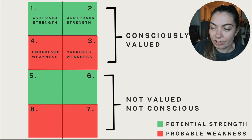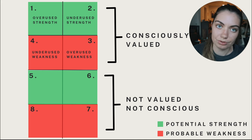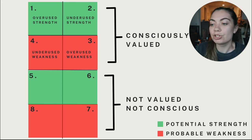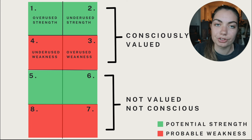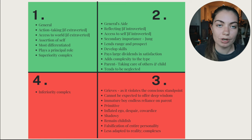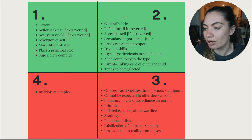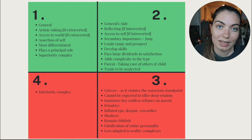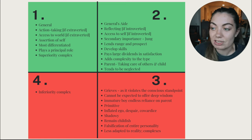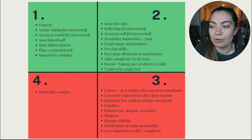Your first function is the correct tool for many jobs but not every job — like having a hammer and thinking everything is a nail. Your second function is also green and has potential to be a strength, but tends to be underused. Your third function is red and a weakness because it's overused — it's like a bratty teenager. Your fourth function is also a weakness but because it's underused.